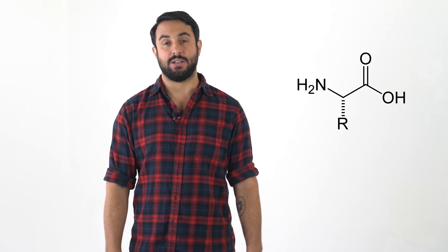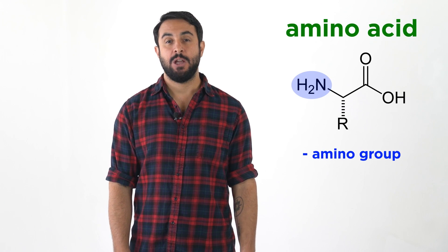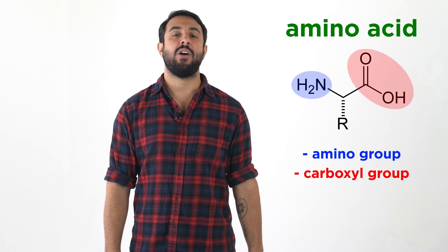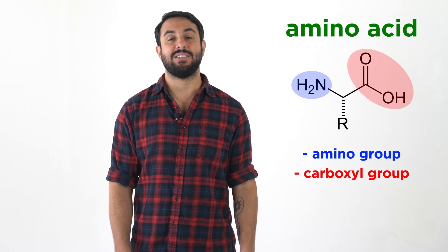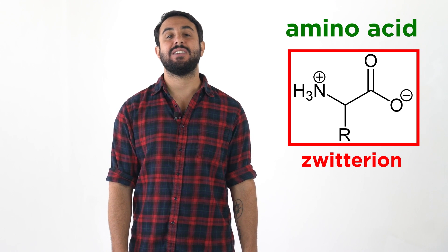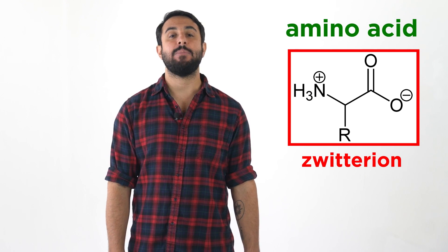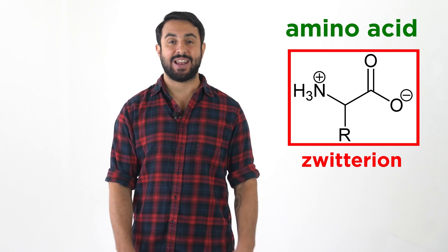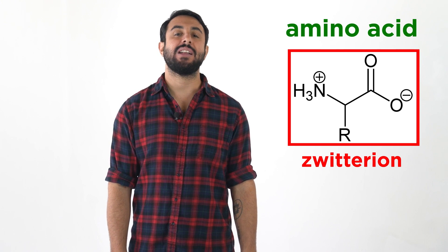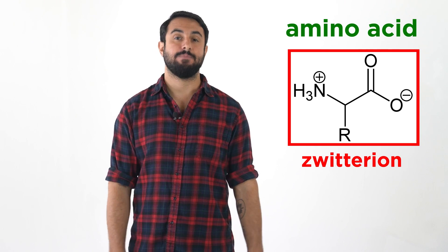An example of a molecule that combines the above two functionalities is the amino acid. These biomolecules have an amino group, which can act as a base, as well as a carboxyl group, which can act as an acid. In fact, at physiological pH, these will exist in the so-called zwitterionic form, where the amine is protonated and the carboxylic acid is deprotonated, but we will get to these compounds a bit later. Professor Dave for Chegg, see you next time!